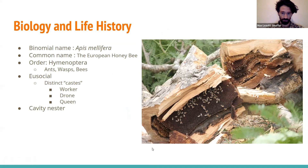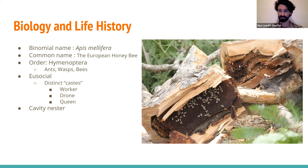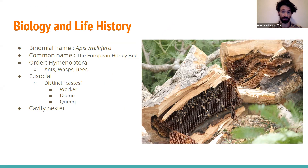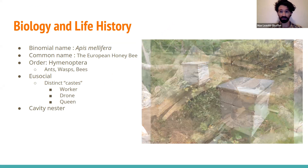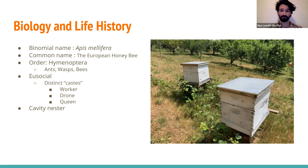Honeybees are what we call cavity nesters, meaning they will modify an existing cavity to create their home. Oftentimes this is a tree — we can see comb on the inside of this tree cavity. But this could also be the open space in your wall. Cavity nesting is also a major reason why bees are so useful in agriculture. These honeybee hives are essentially just man-made empty tree cavities.